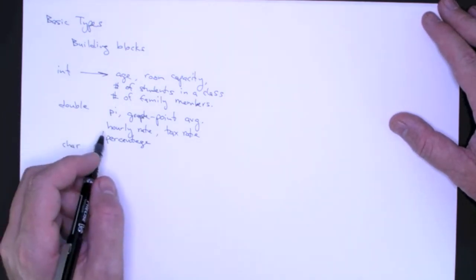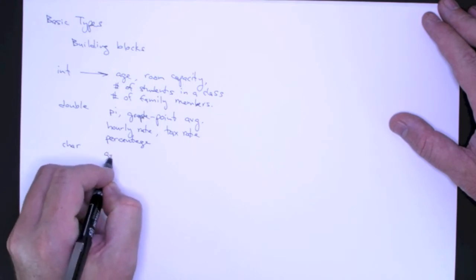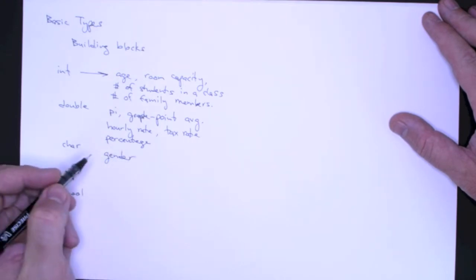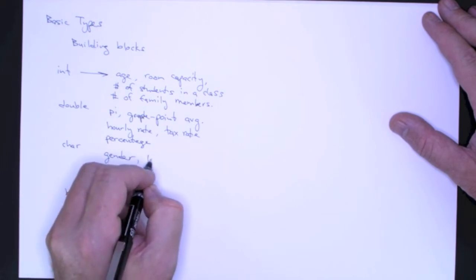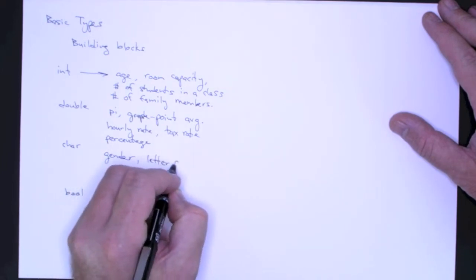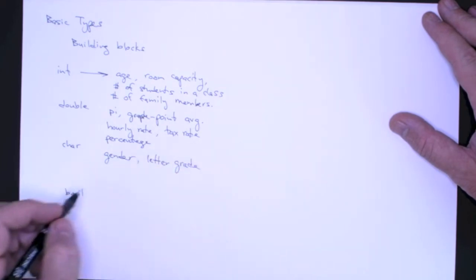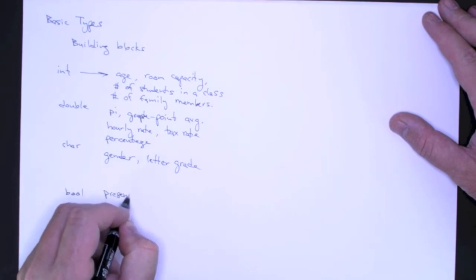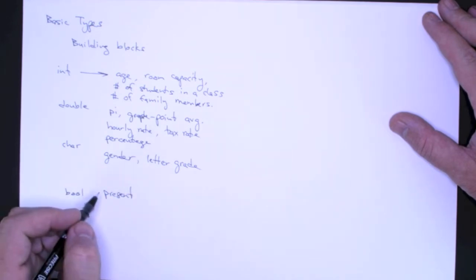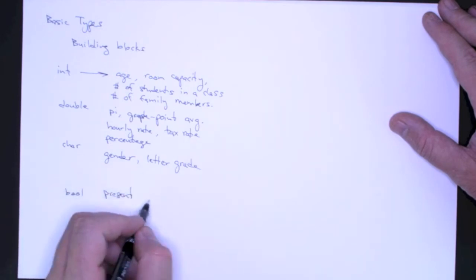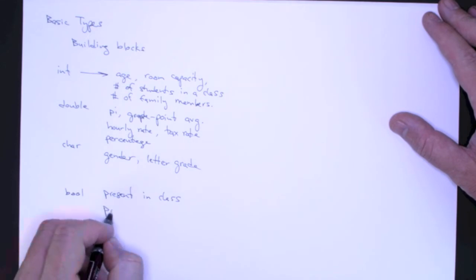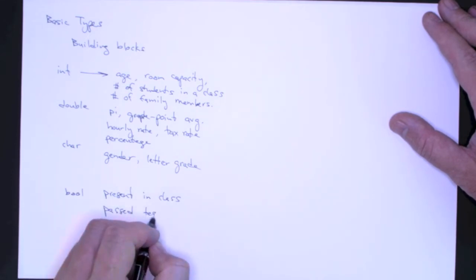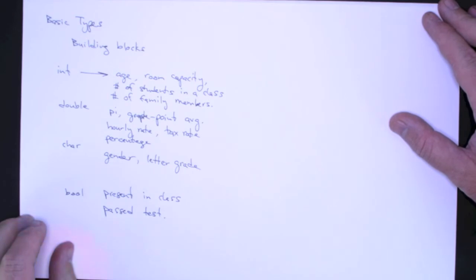In terms of character, we could use character to represent gender, which can be male or female. If we have a simple letter grade system, then we could use it to represent letter grades like A, B, and C. And then finally our Booleans. We can represent quantities or information that can be true or false, like if a given person is present in class, if they're enrolled in a class, if they pass the test, pass the class, things of that nature.